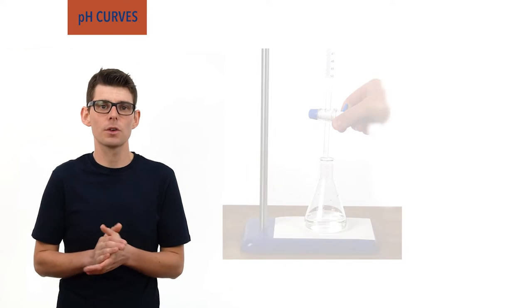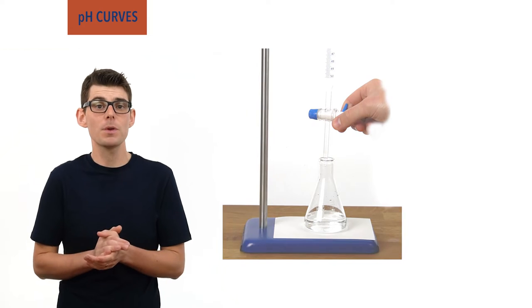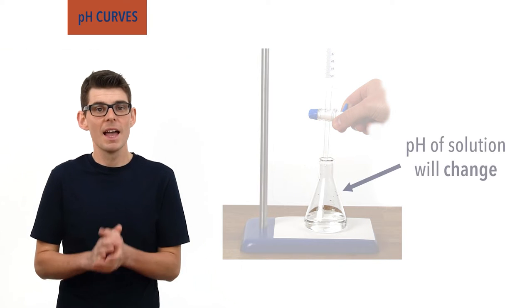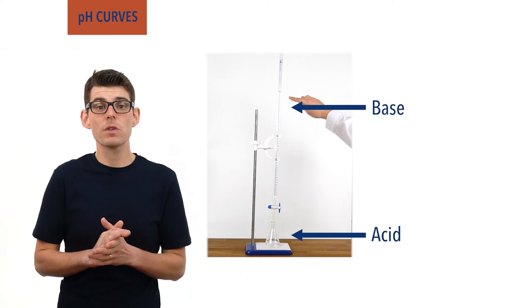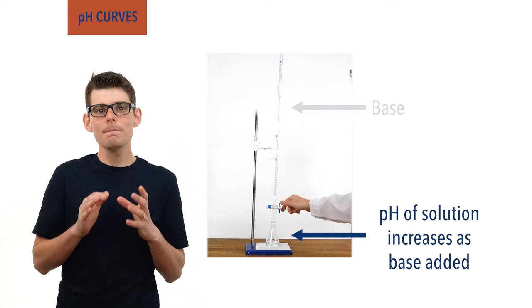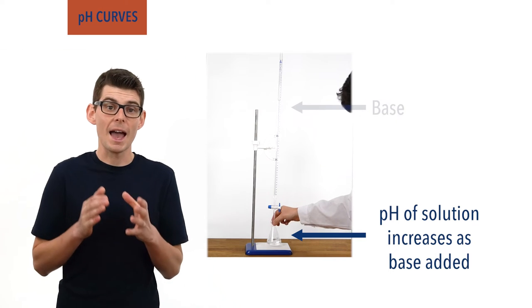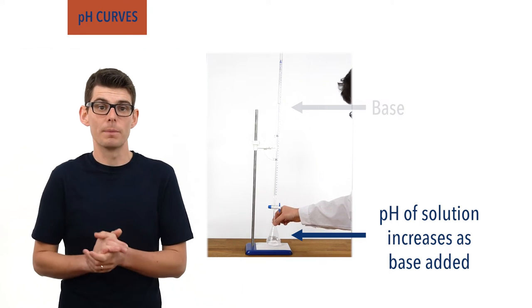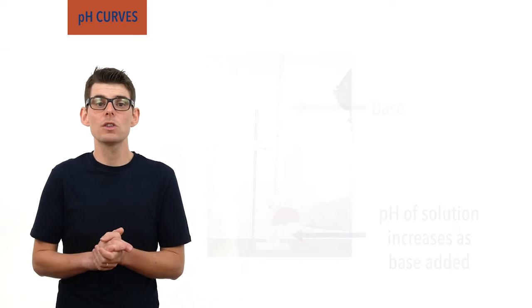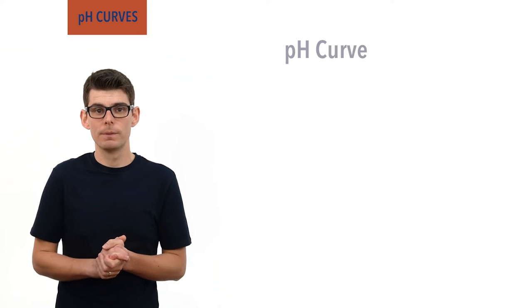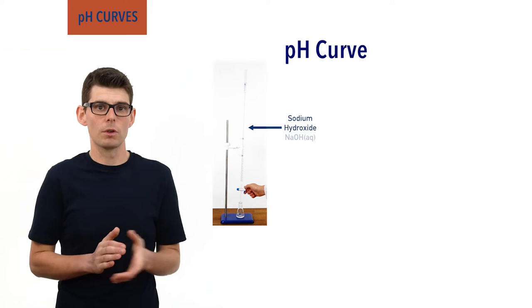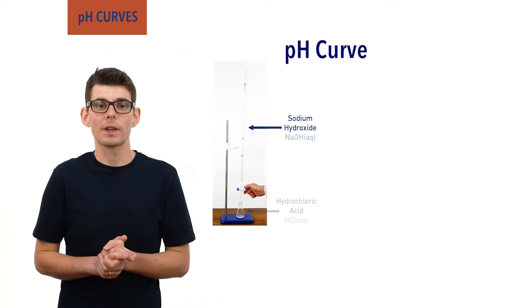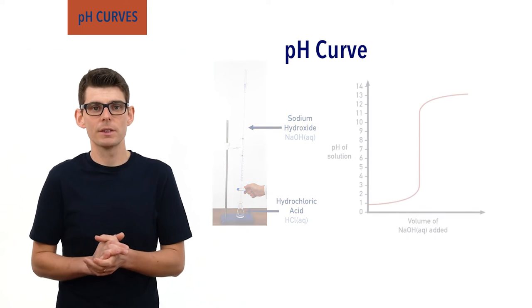During a titration, the pH of the solution in the conical flask or beaker under the burette will change. As a base is added to an acid for example, the pH of the solution will increase. If we actually measure and plot a graph to show how the pH changes as more base gets added, we get an interesting shape called a pH curve. For example, if sodium hydroxide solution, a strong base, is added to hydrochloric acid, a strong acid, the curve looks like this.